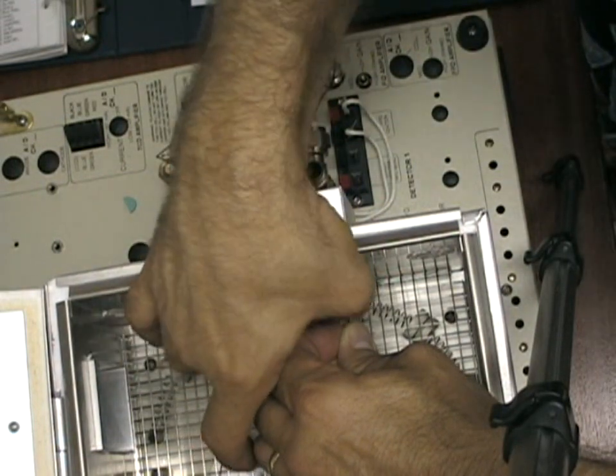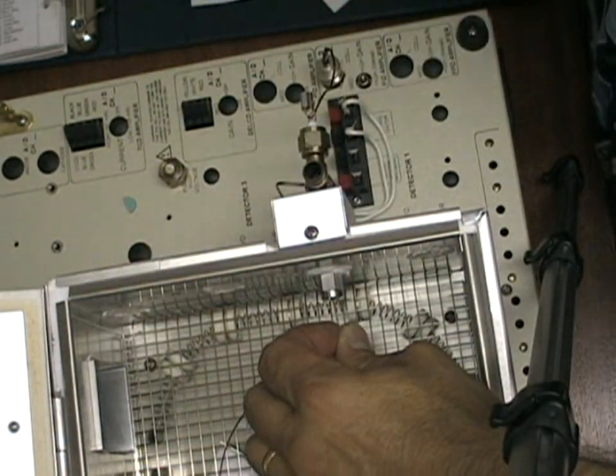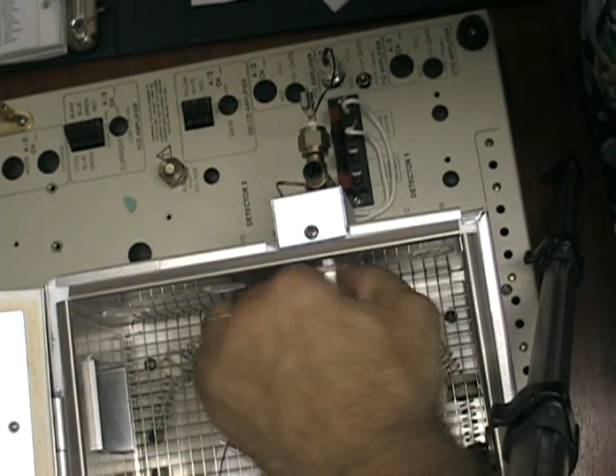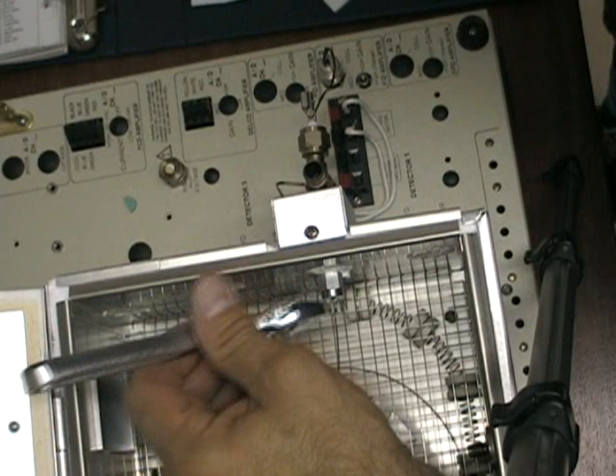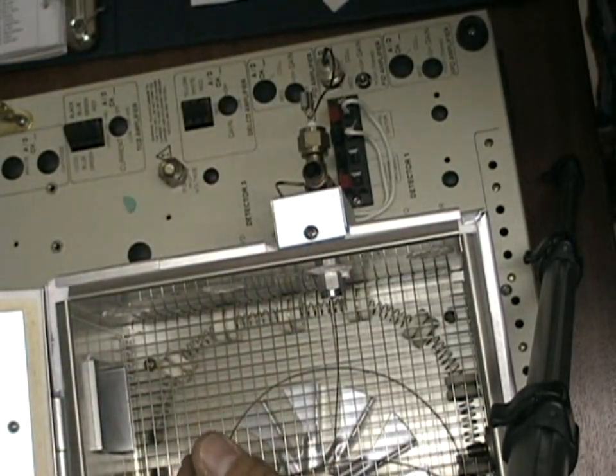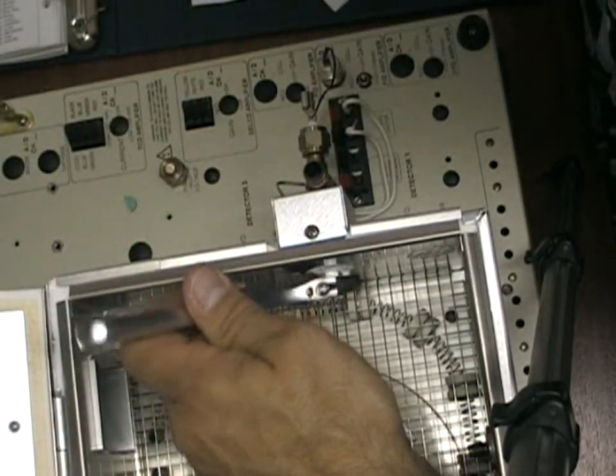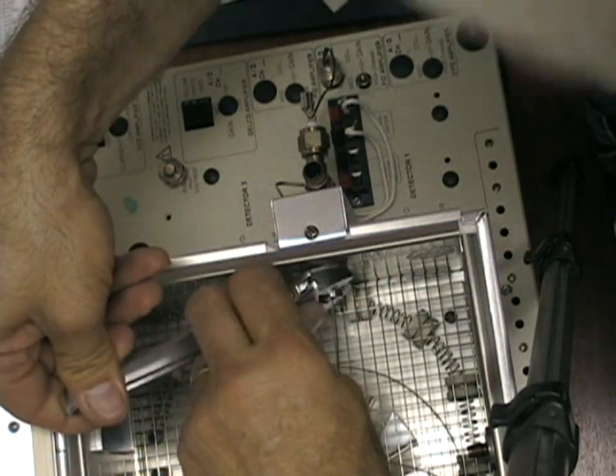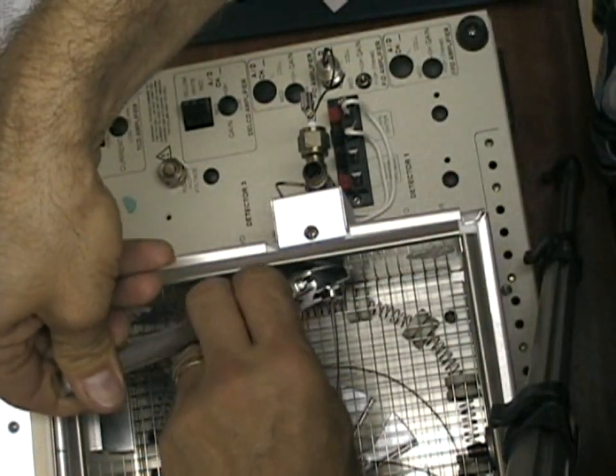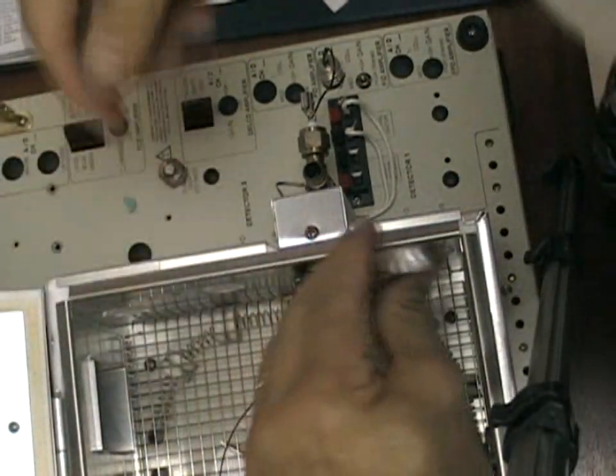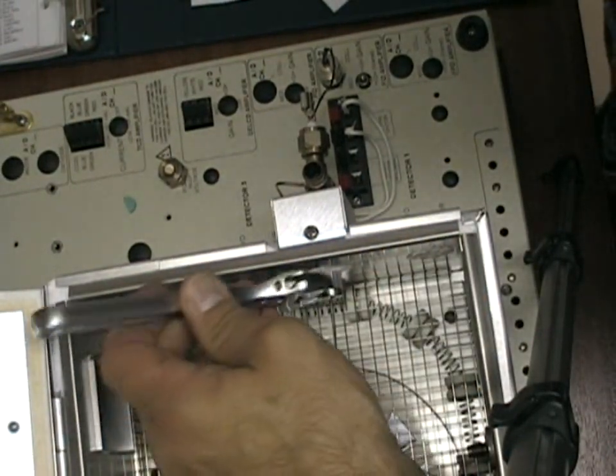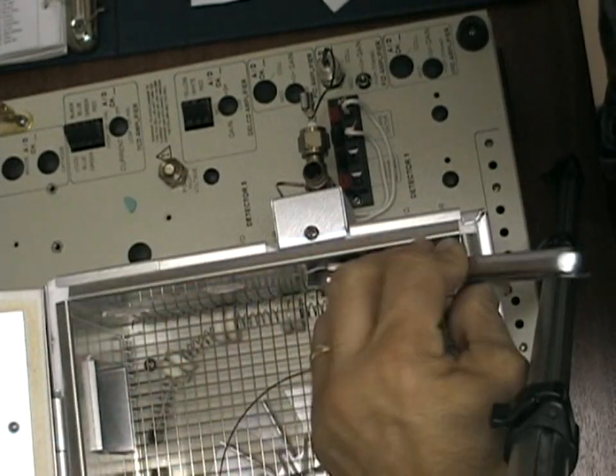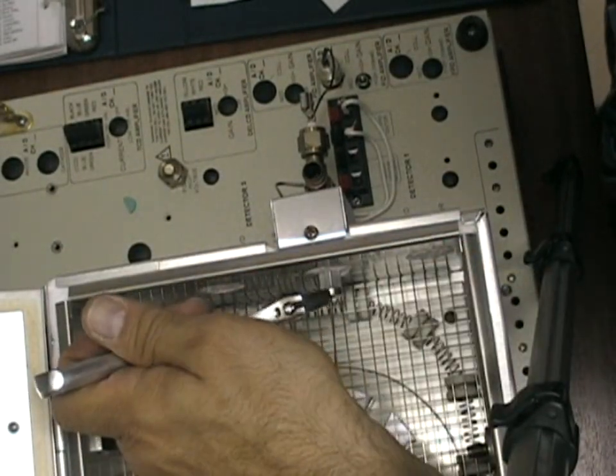At this point, tighten the nut by hand, and again using the wrench, tighten three quarters of a turn past finger tight to create the gas tight seal. This will ensure proper operation of the FID with good response from the peaks.